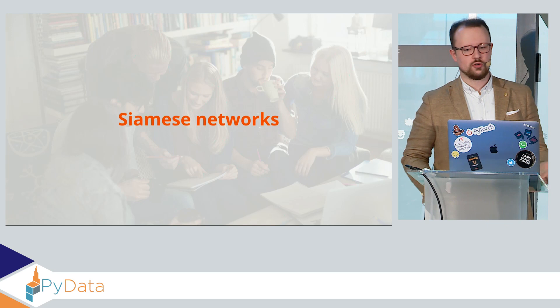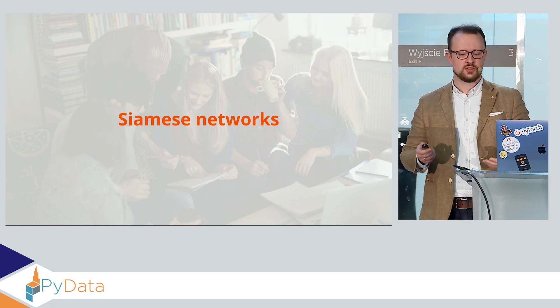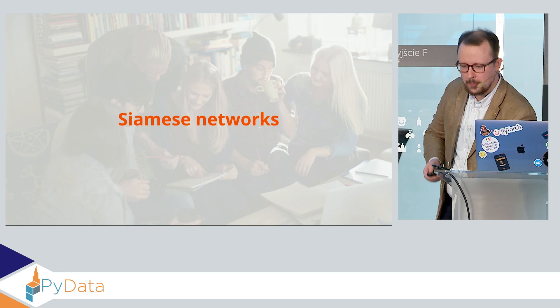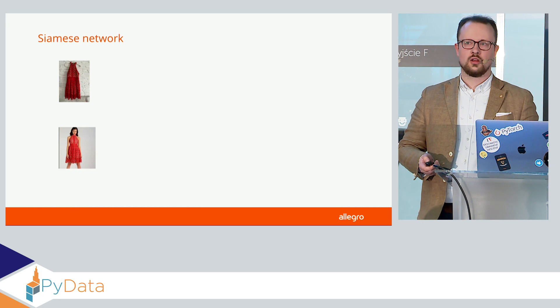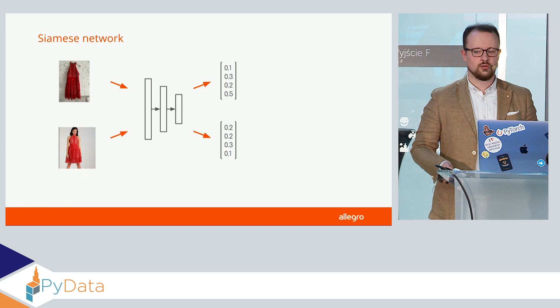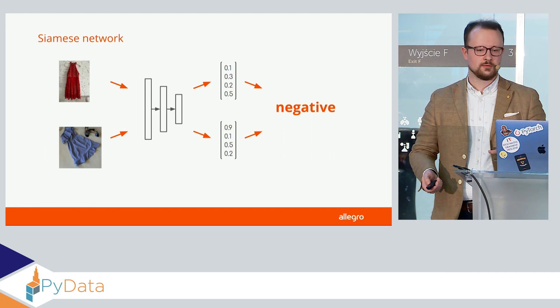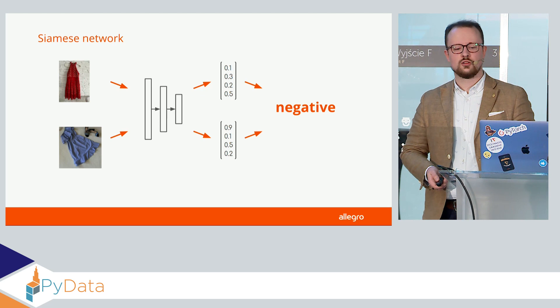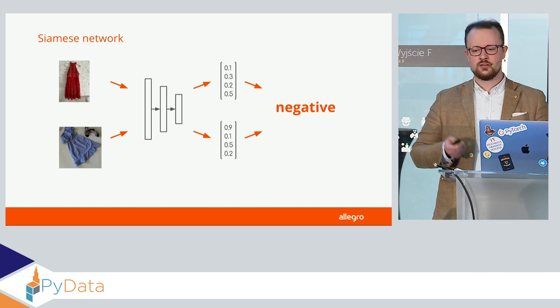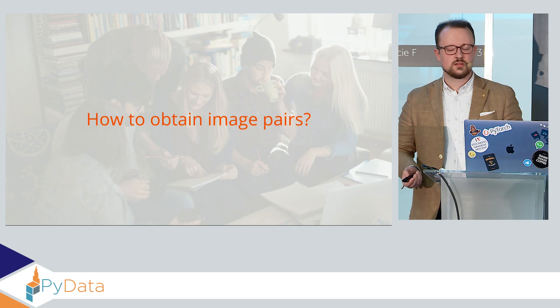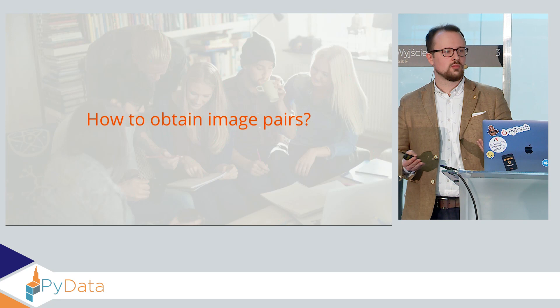The answer may be a Siamese network, which is constructed as follows. Instead of using a single image and classifying something, we provide two images for training. We pass them through our encoder, get an embedding for both images, and then we're trying to predict if those are the same dress — that will be our positive — or two different dresses — that will be negative. We'll be using contrastive loss for this. For the negatives it would be quite easy, as we can just pick two random images from our platform and we get a negative pair.